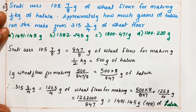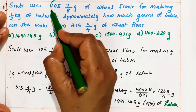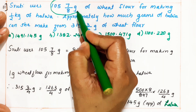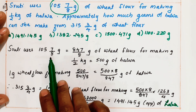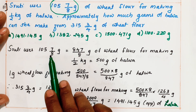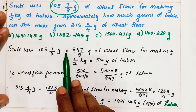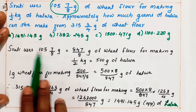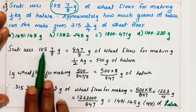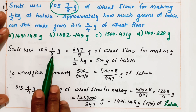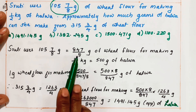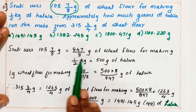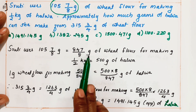So first, what is the meaning of this number 105 7/8? We are converting the mixed fraction to an improper fraction. 105 7/8 is equal to — multiply these two numbers: 105 into 8 is 840, plus 7 is 847, divided by 8 grams. So this is nothing but 847/8 grams.